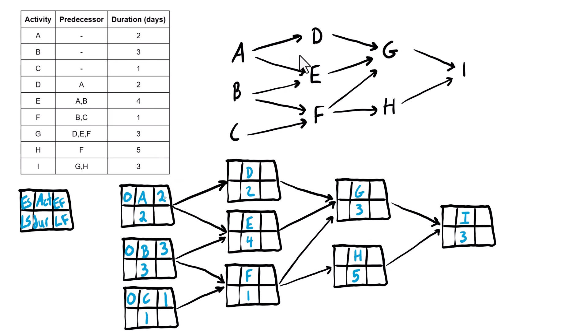We take the early finish from the predecessor and bring that into the early start of the successor. So activity D gets an early start of two. Where we have more than one predecessor coming in, we take the larger of the two values — so activity E gets three, because three is larger than two. And activity F also gets three, because three is larger than one. Adding durations: two plus two is four, three plus four is seven, and three plus one is four.